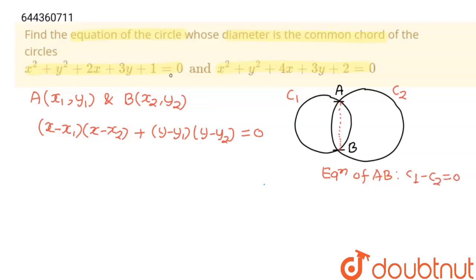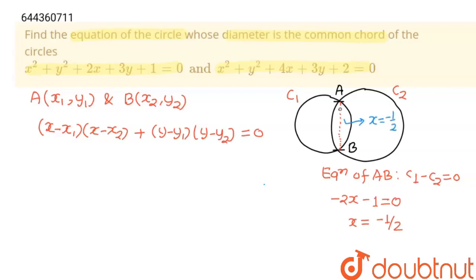When you subtract both equations, the x² and y² terms cancel out. 2x minus 4x gives minus 2x. 3y minus 3y becomes 0. 1 minus 2 becomes minus 1, equals 0. From here we get x = -1/2. So the chord AB is the vertical line x = -1/2, meaning x1 = x2 = -1/2.